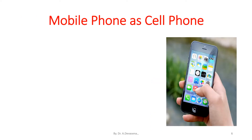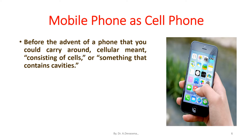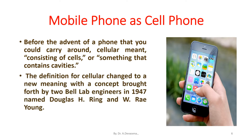Let us see why the mobile phone is called a cell phone. Before the advent of a phone that you could carry around, cellular meant consisting of cells or something that contains cavities. The definition for cellular changed to a new meaning with the concept brought forth by two Bell Lab engineers in 1947, named Douglas H. Ring and W. Rao Young.